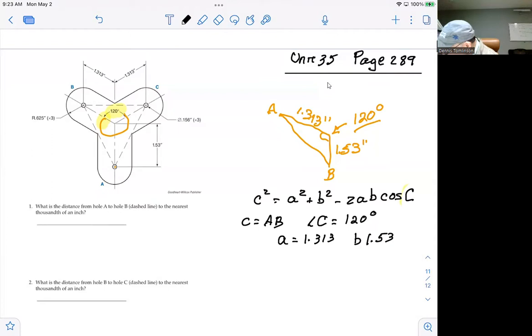So this is the data that we plug into this formula and it will allow us to solve for the square of the length of the side that we're looking for. Or in other words, the length of side AB squared will equal 1.313 squared plus 1.53 squared minus two times 1.313 times 1.53 times the cosine of 120 degrees.